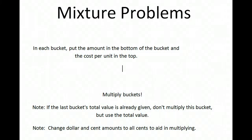Here are the final notes on mixture problems. In each bucket, put the amount in the bottom and the cost per unit in the top, then get your equation by multiplying the buckets. If the last bucket's total value is already given, don't multiply — just use the total value. Also, change dollar amounts into cents so you don't have to deal with decimals.